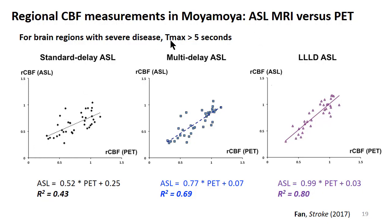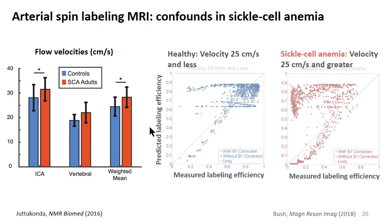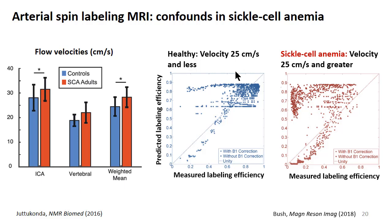Even in very severe cases, across 15 Moyamoya patients, while there are correlations with each different ASL scan versus PET, it is the long-label, long-delay ASL that has the strongest correlation — so you must adjust the post-label time. In other patients such as sickle cell anemia patients, there are increased flow velocities in major inflow arteries that may lead to different labeling efficiencies than predicted. This is another example of how comparison with a reference can help address confounders of arterial spin labeling.